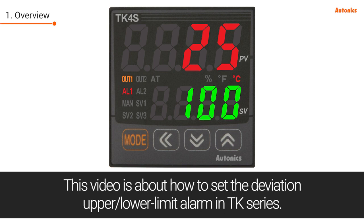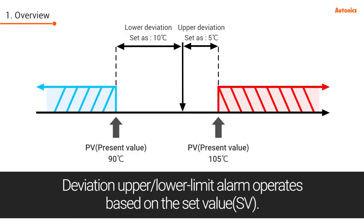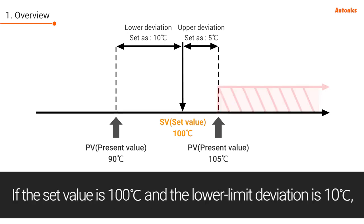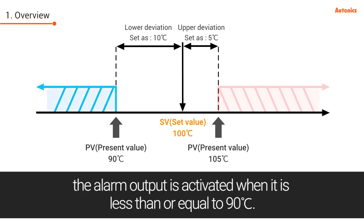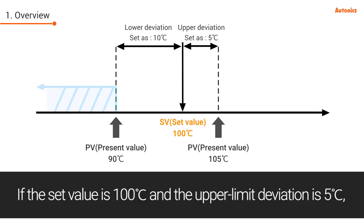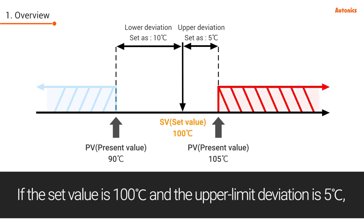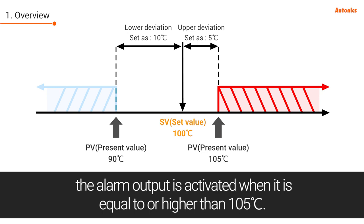This video is about how to set the deviation upper lower limit alarm in the TK series. The deviation upper lower limit alarm operates based on the set value. If the set value is 100 degrees and the lower limit deviation is 10 degrees, the alarm output is activated when it is less than or equal to 90 degrees. If the set value is 100 degrees and the upper limit deviation is 5 degrees, the alarm output is activated when it is equal to or higher than 105 degrees.